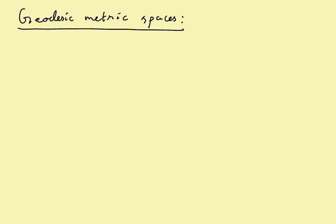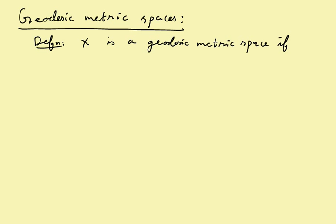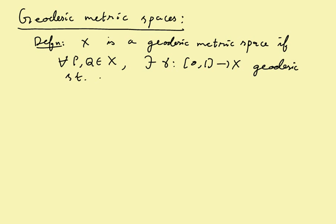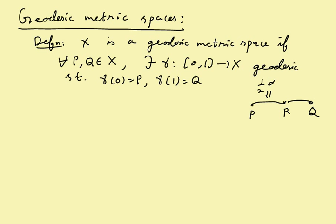We'll be looking at geodesic metric spaces for the first definition of negative curvature. X is a geodesic metric space if it's a complete metric space with geodesics between every pair of points: for all P, Q in X there exists a geodesic gamma from [0,1] to X with gamma(0)=P and gamma(1)=Q. Interestingly, this is equivalent to requiring that there is a midpoint between any P and Q — a point R such that d(P,R) = d(Q,R) = (1/2)d(P,Q).